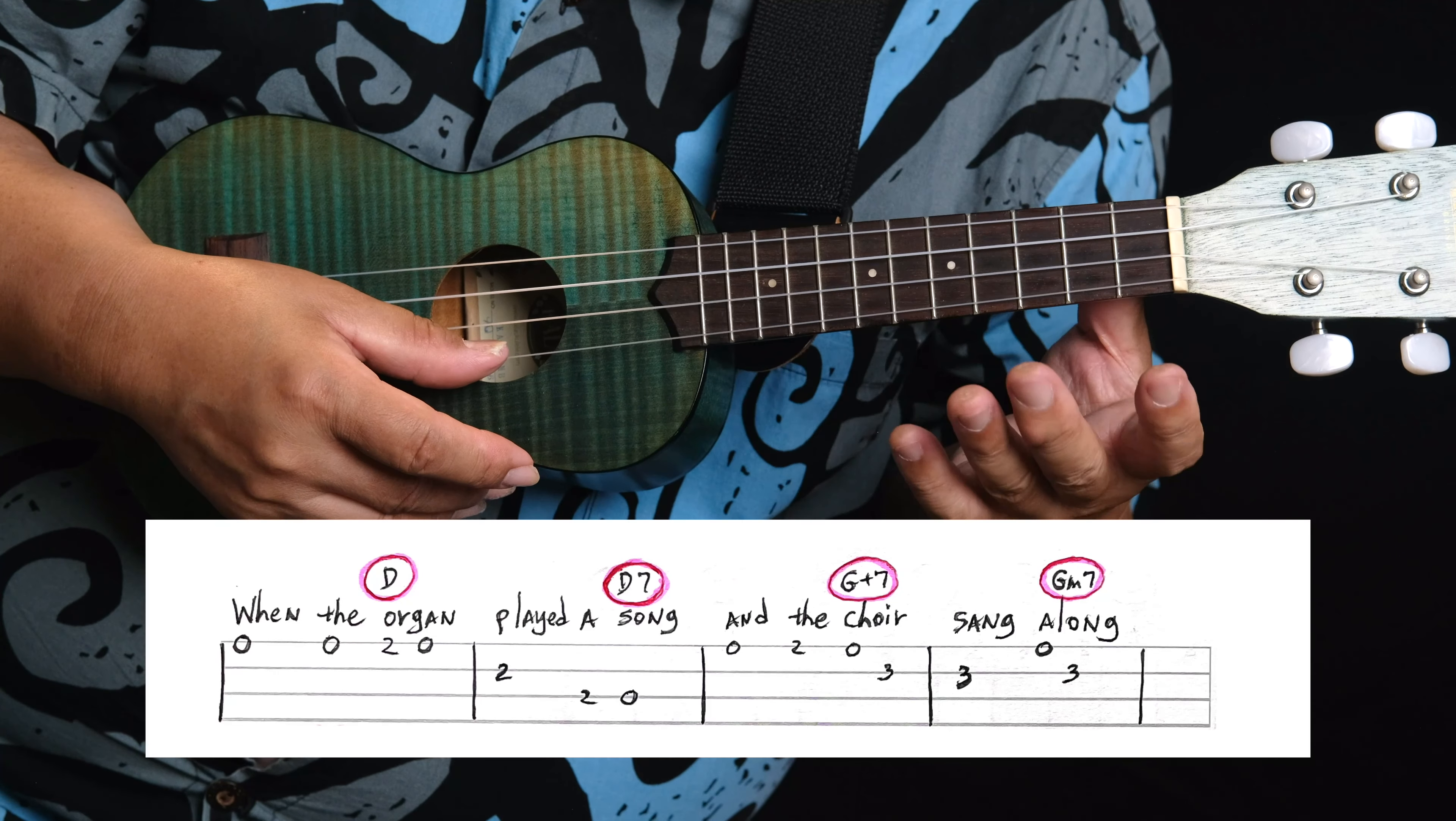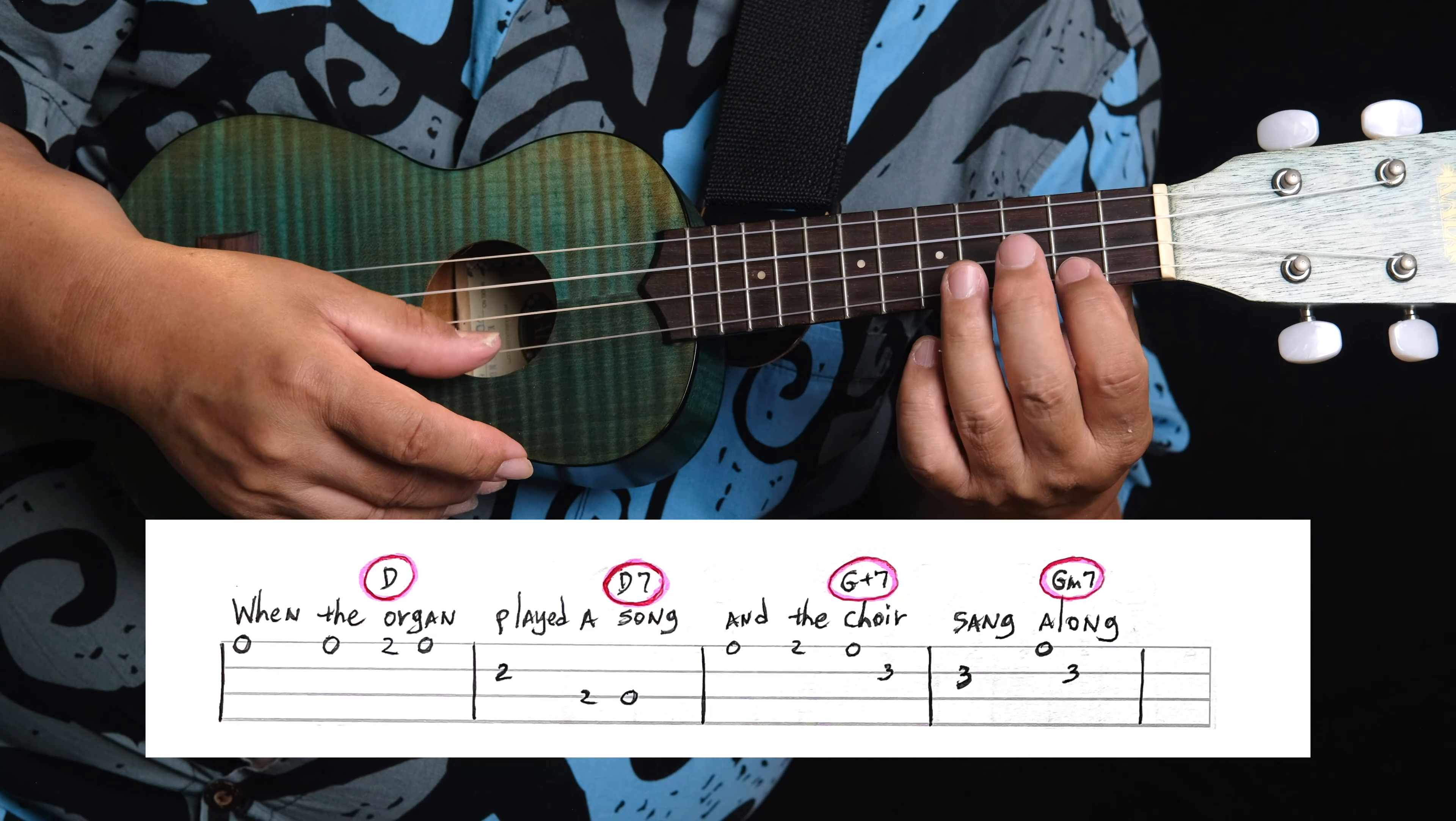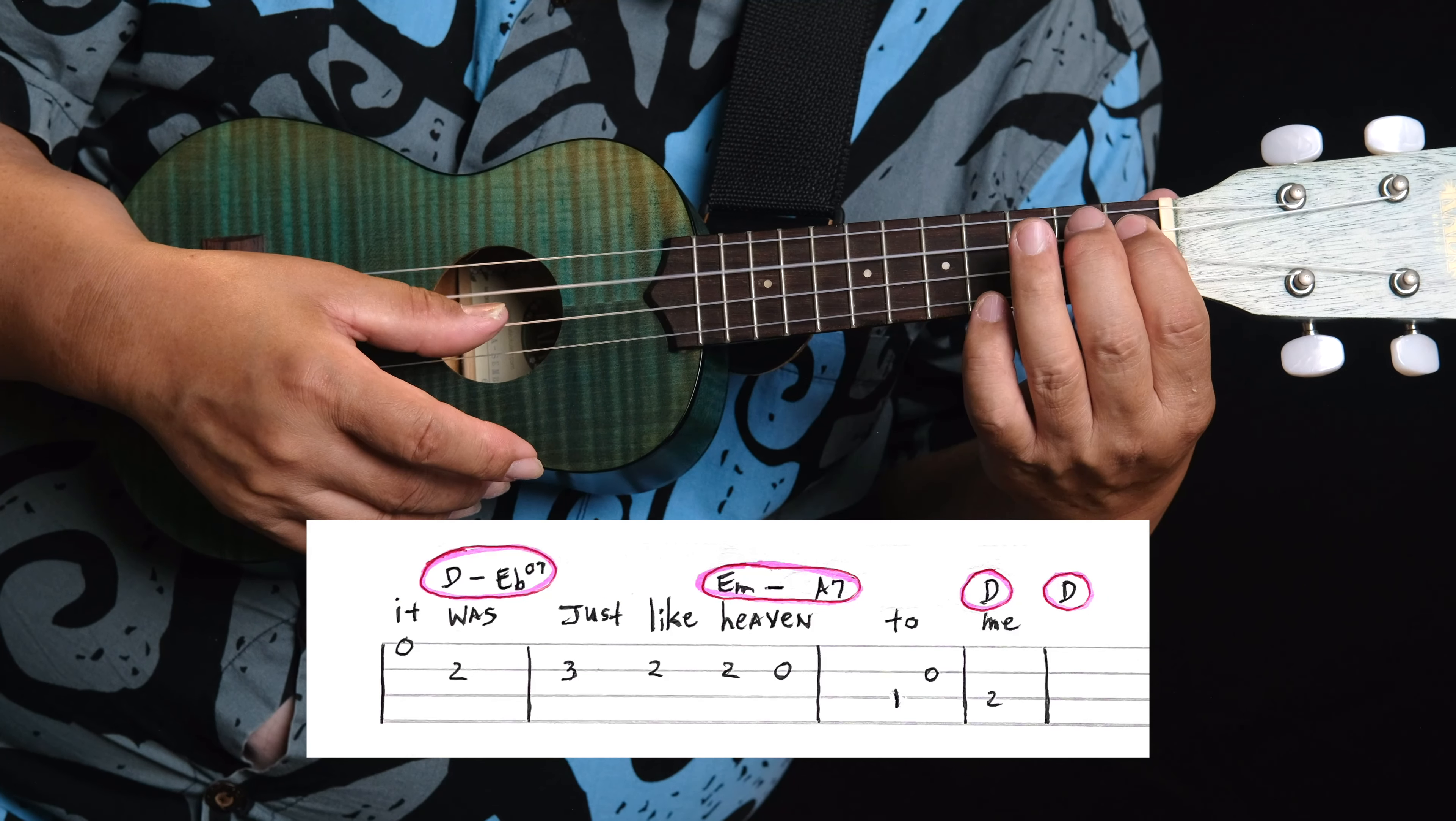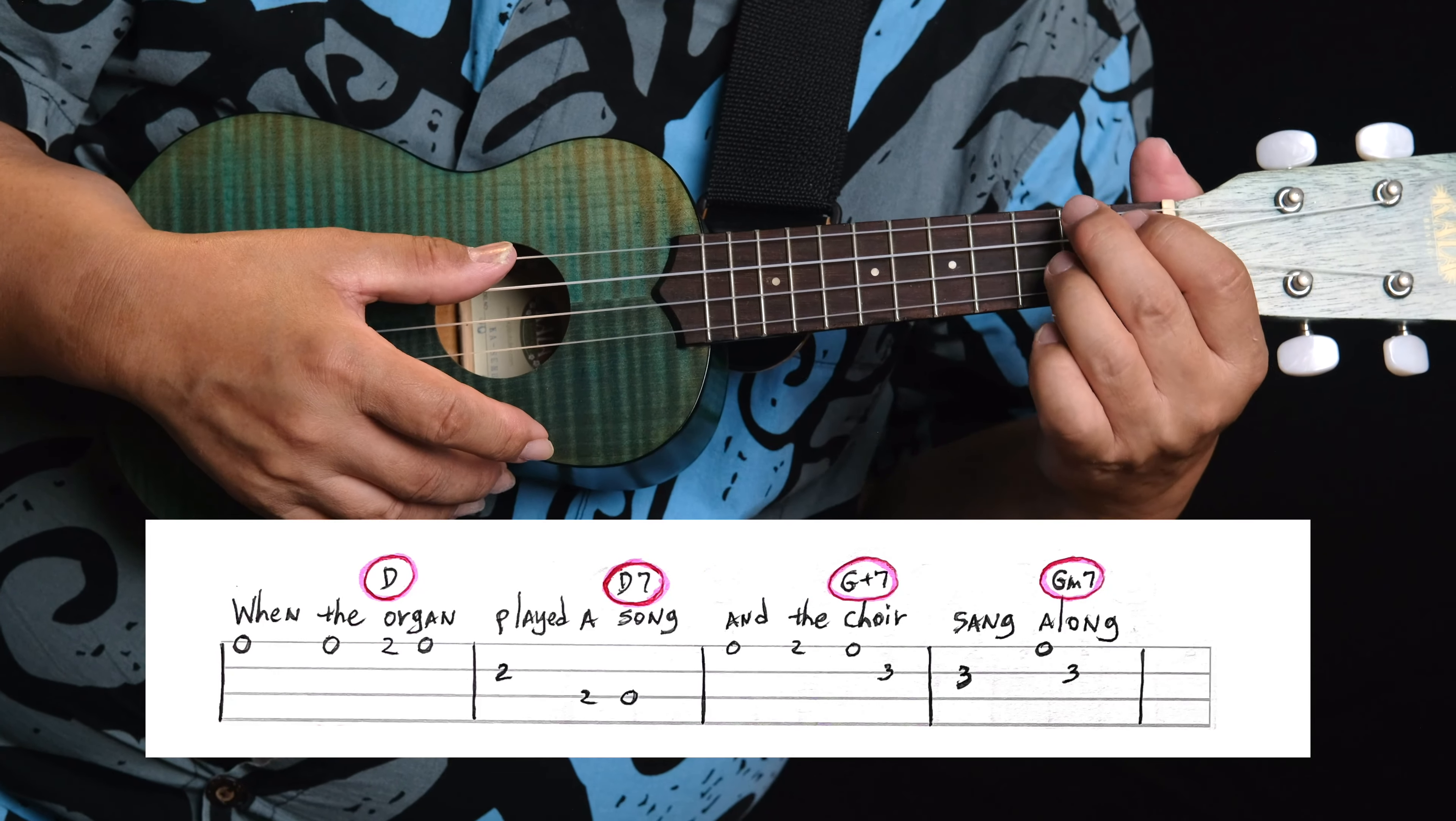Okay, here's the second verse. When the organ played a song, and the choir sang along, it was just like heaven to me. Okay, here's the second verse with the chords.